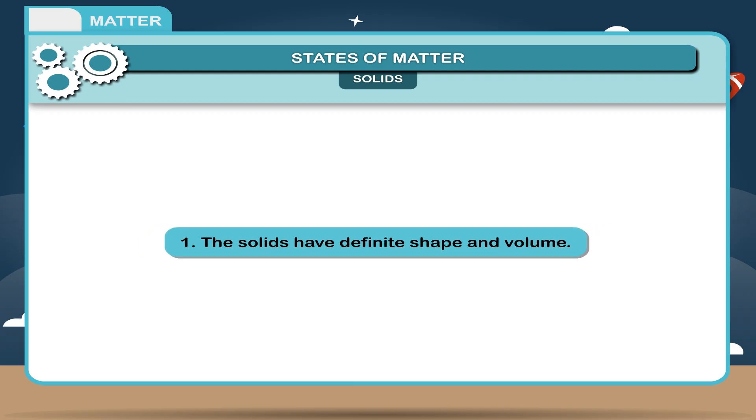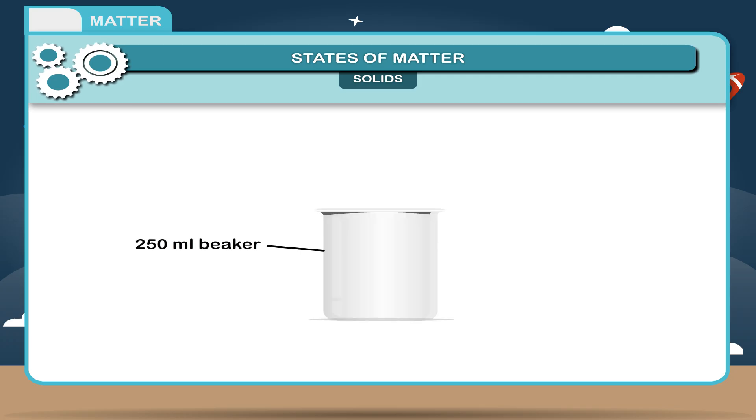1. Solids have definite shape and volume. Activity: To show that solids have definite volume, take a 250 ml beaker filled with water up to the brim and drop a stone into it.